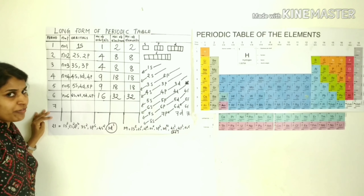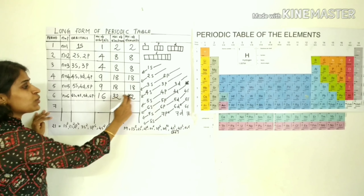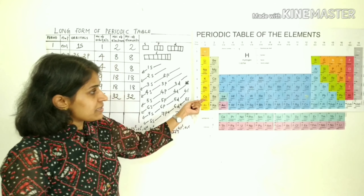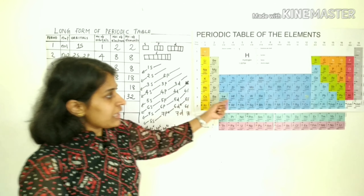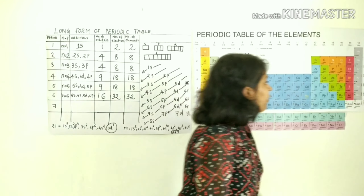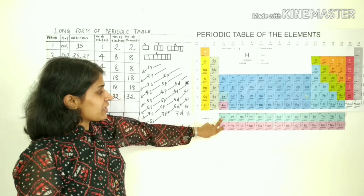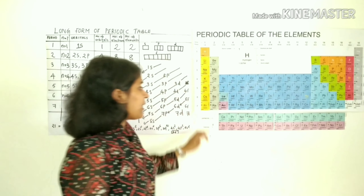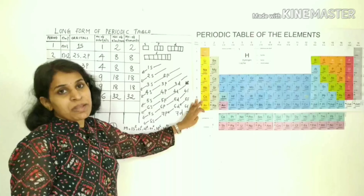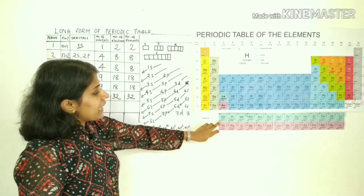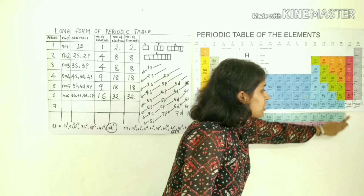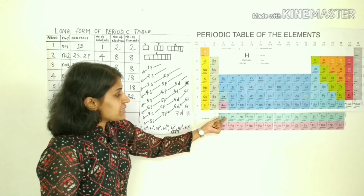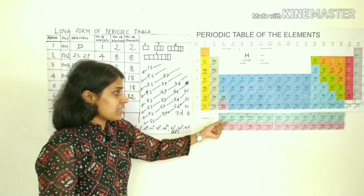The number of electrons equals the number of elements, so there are 32 elements in the sixth period. These range from cesium to radon. Among these, the elements from cerium to lutetium — where the last electron enters the 4f orbital — belong to the 4f inner transition series, also known as the lanthanoids.